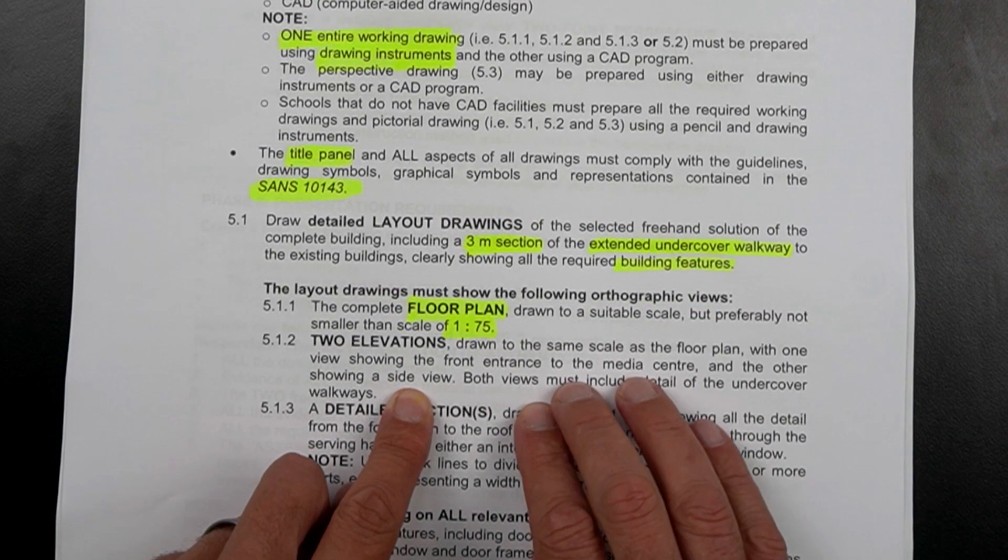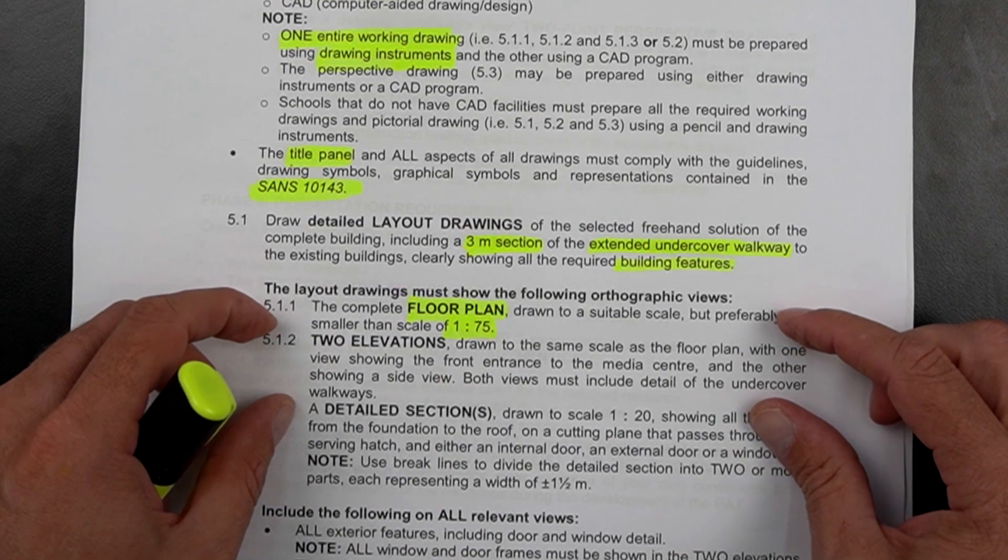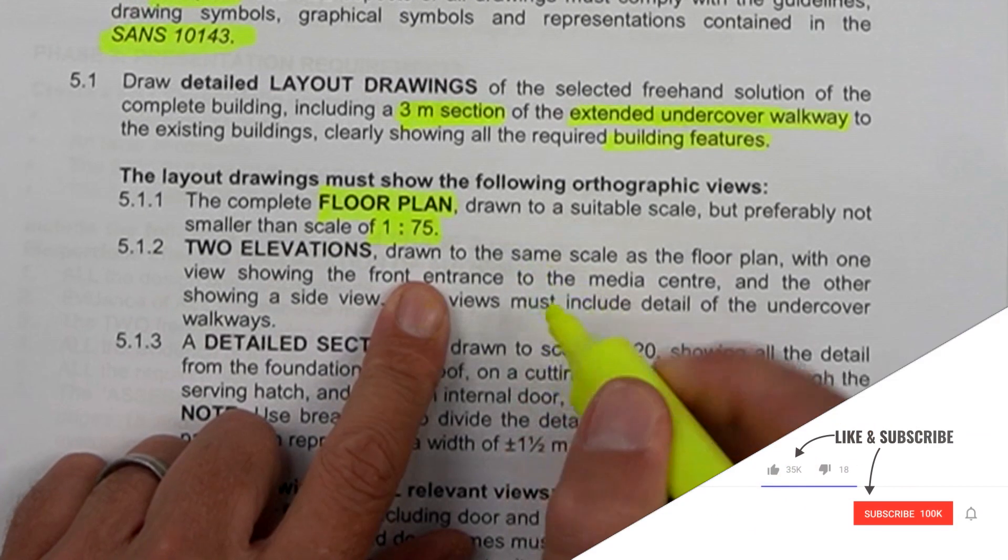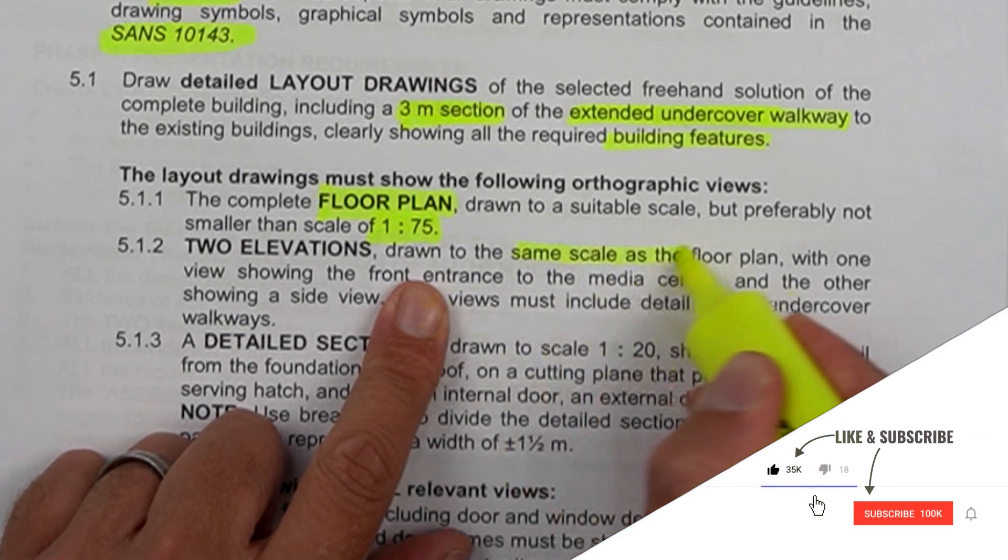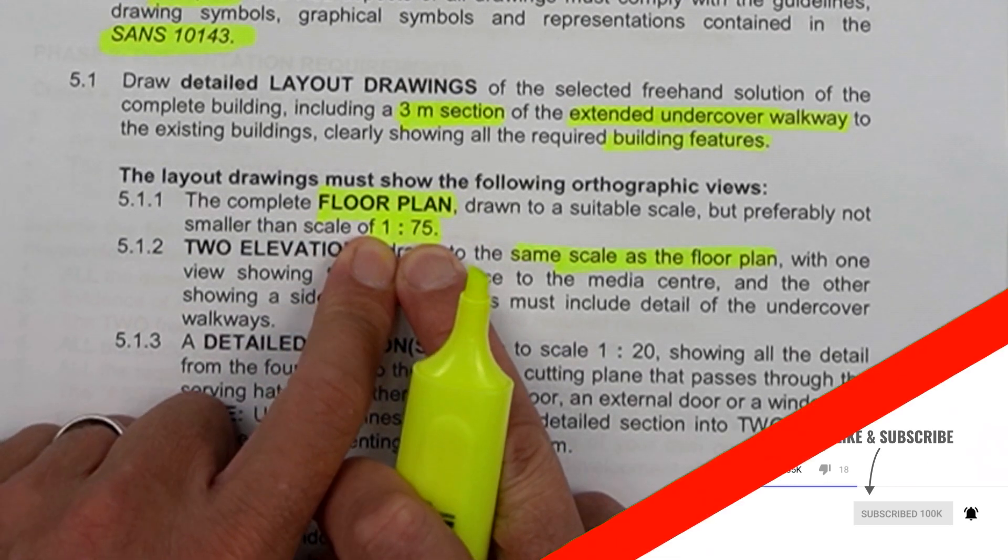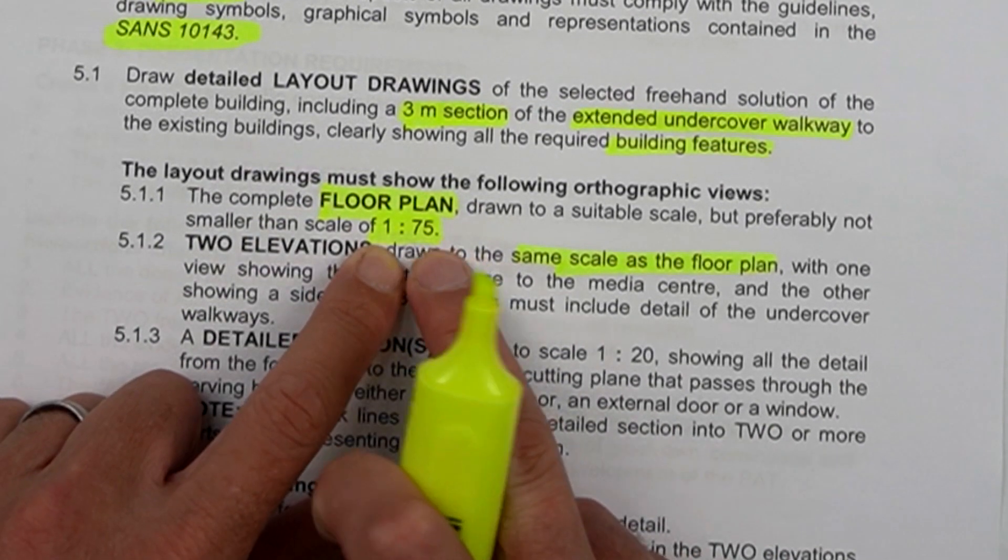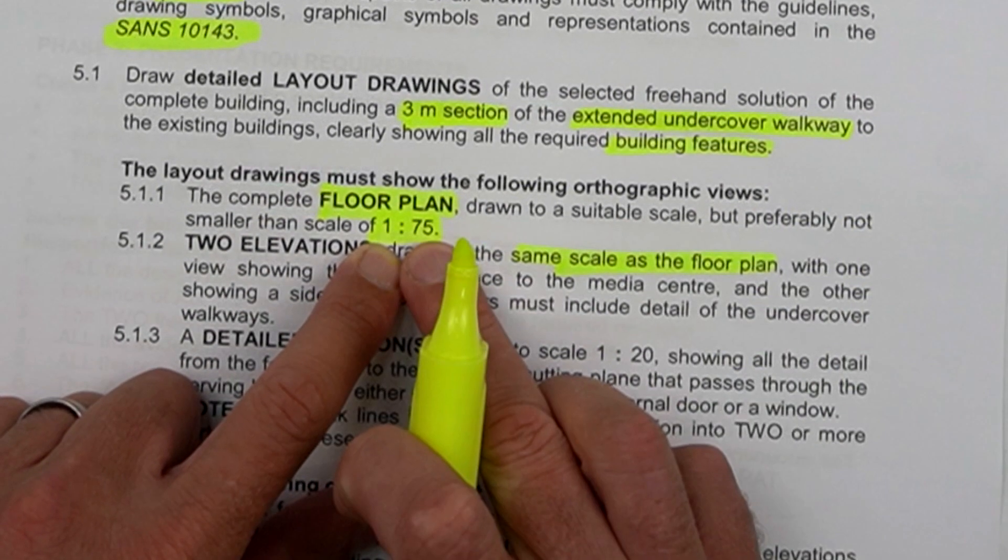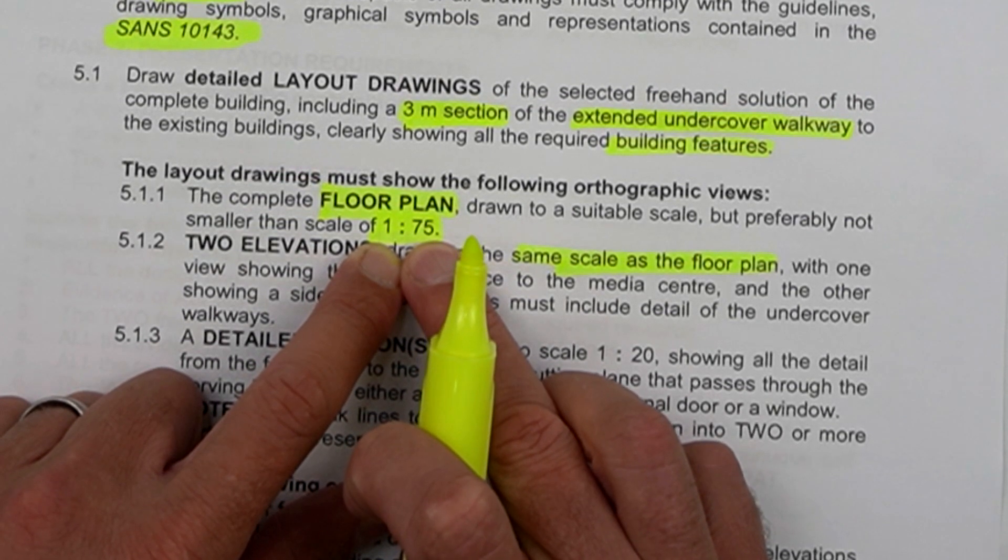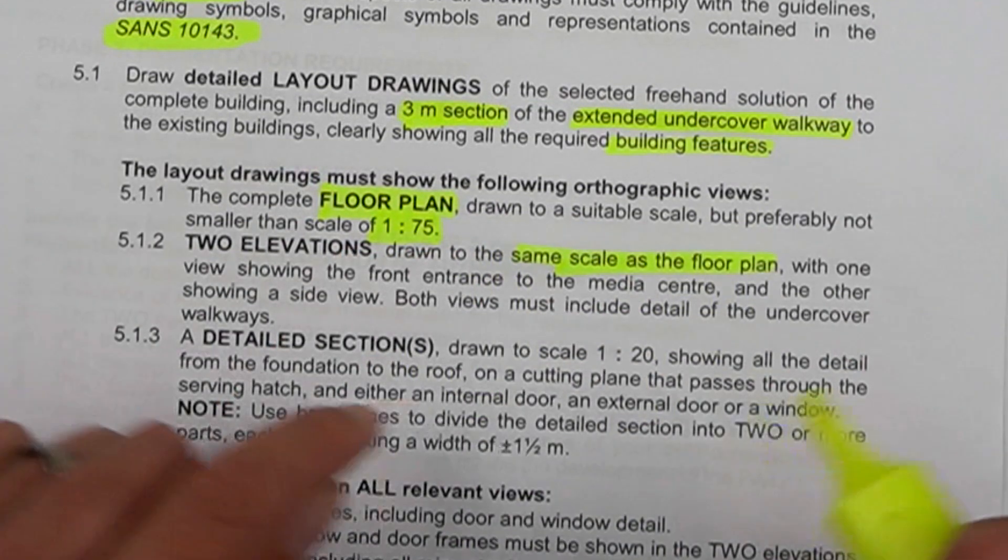Let's look on page 13 in your PAT document. What are the basic requirements for your two elevations? They need to be drawn to the same scale as the floor plan. Now it was preferred here to be 1 to 75. The floor plan, I said it could be that you might need to use 1 to 100, but please nothing smaller than 1 to 100 to get all of this drawn correctly.